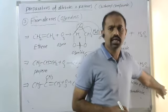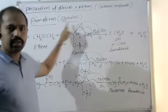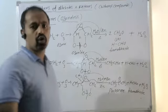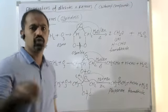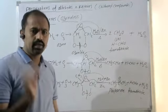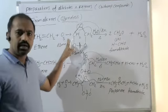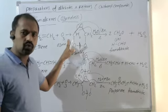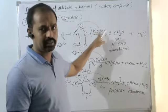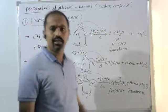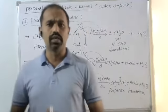Third one: from aldehydes — based on the ozonolysis process. What is called ozonolysis? Unsaturated compounds like alkenes are treated with ozone, followed by zinc dust with water. We get the corresponding carbonyl compounds. This is called the ozonolysis process.